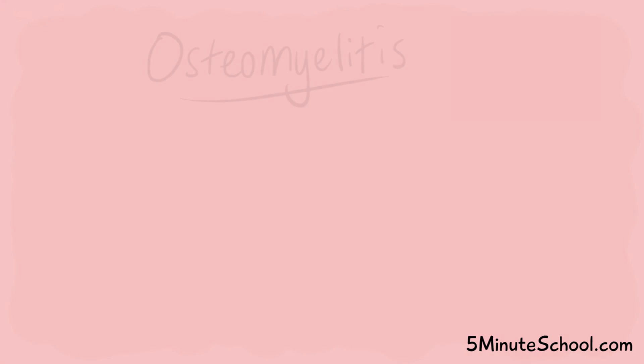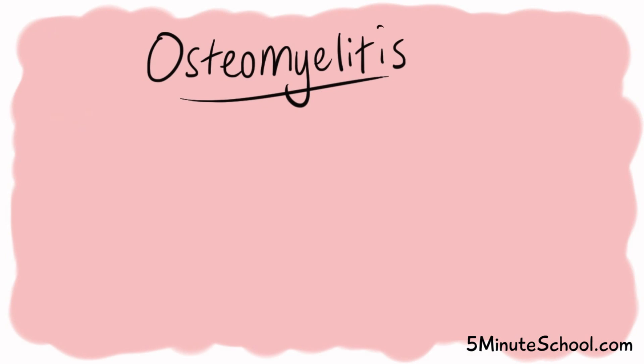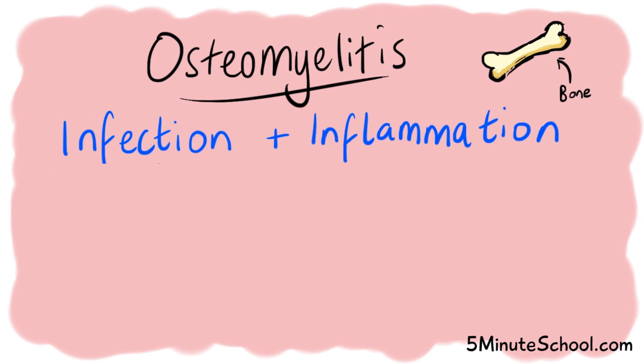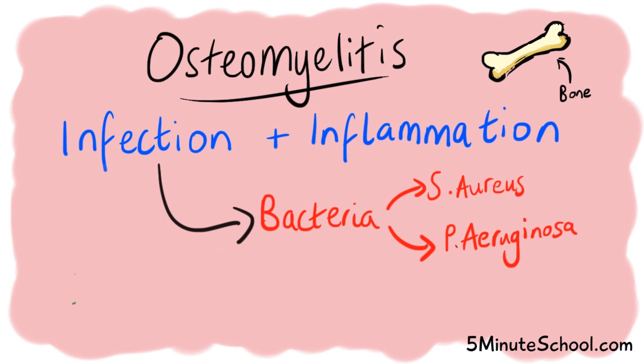In this video we're going to be talking briefly about osteomyelitis. Osteomyelitis is an inflammatory condition of the bone which may include the bone marrow, and this happens because of an infection. Bacteria like Staphylococcus aureus or Pseudomonas aeruginosa are usually the cause of the infection, but it may also be fungal as well.